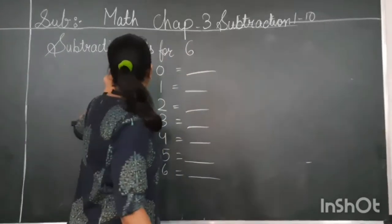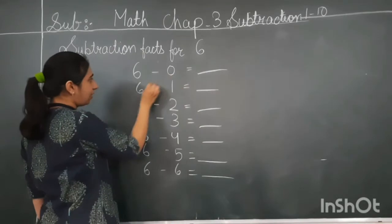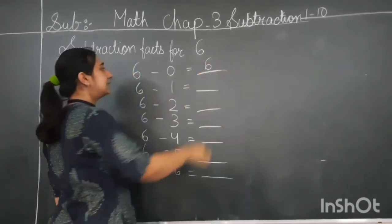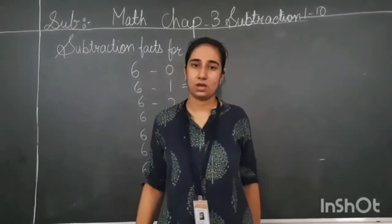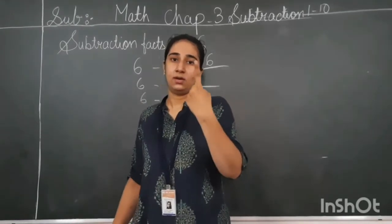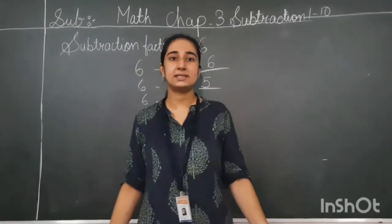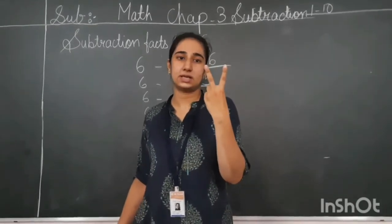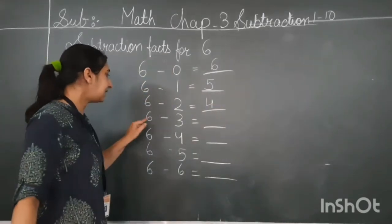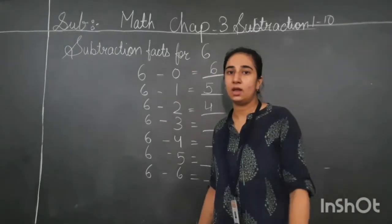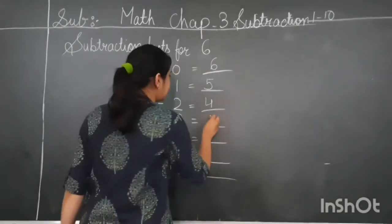Let's do now subtraction facts for six. Six minus zero — when we subtract zero from six, we get the number itself as the answer, that means six. Six minus one: keep six in your mind, show one in your finger, count before six — that will be five. So five is your answer. Six minus two: keep six in your mind, show two in your fingers, count before six — five, four. Four is the answer. Six minus three: keep six in your mind, show three in your fingers, count before six — five, four, three. Three is the answer.